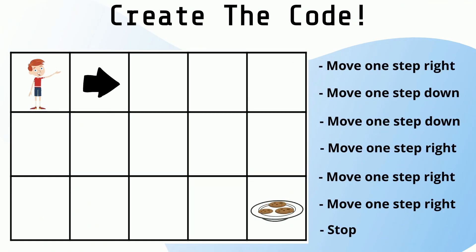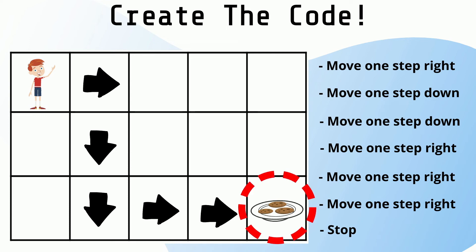Here is the answer. First, I will need to move one step to the right. Then, I will need to move two steps down. I can add a loop there to make the code repeat two times.